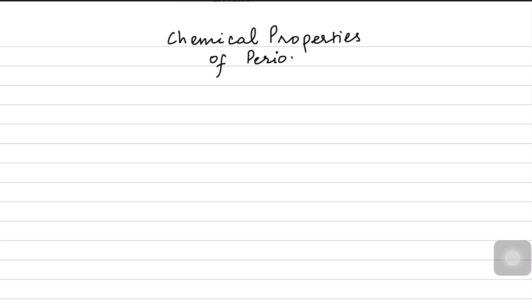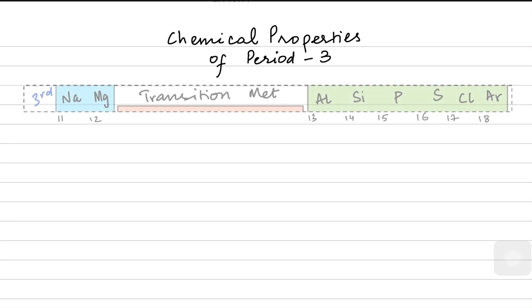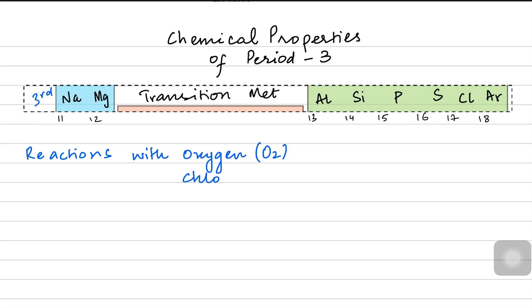We'll talk about their oxides and their chlorides. Let's go back to period 3. We know that these elements could react with oxygen to produce oxides, and they can react with chlorine (Cl2) to produce chlorides. So we'll be talking about oxide formation and chloride formation.